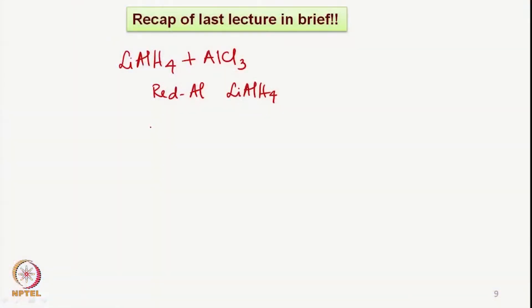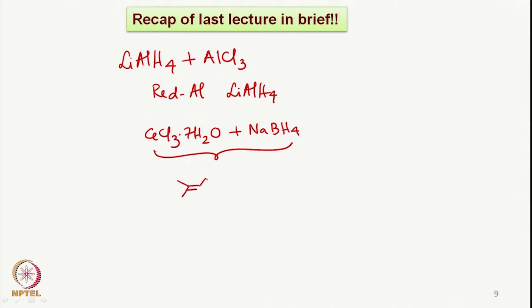Then towards the end, we discussed Luche reduction. After a lot of combinations, Luche and Gemal found out that cerium chloride heptahydrate (CeCl₃·7H₂O), along with sodium borohydride, very comfortably gives a reducing system which allows reduction of particularly carbonyl groups which are alpha,beta-unsaturated — whether aldehyde or ketone — leading specifically to the corresponding allylic alcohol.